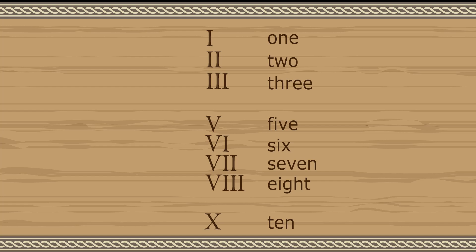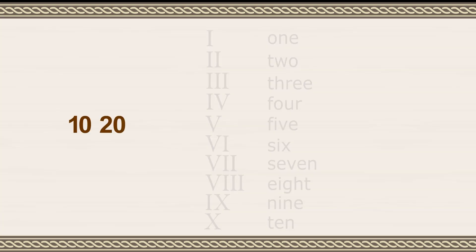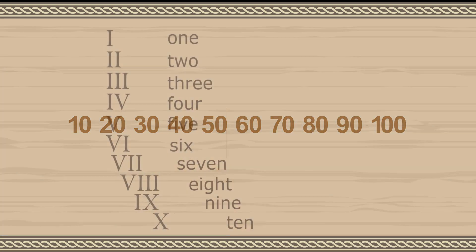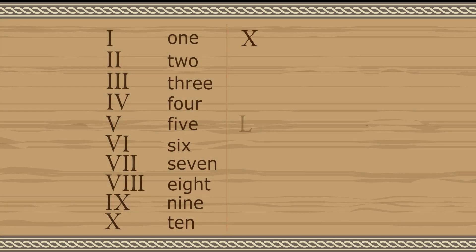And the quantities 4 and 9 are represented by the symbols for 5 or 10, V and X, preceded by an I. The numbers 10 through 100 follow the same pattern except that the symbols X, L, and C are used to represent 10, 50, and 100.